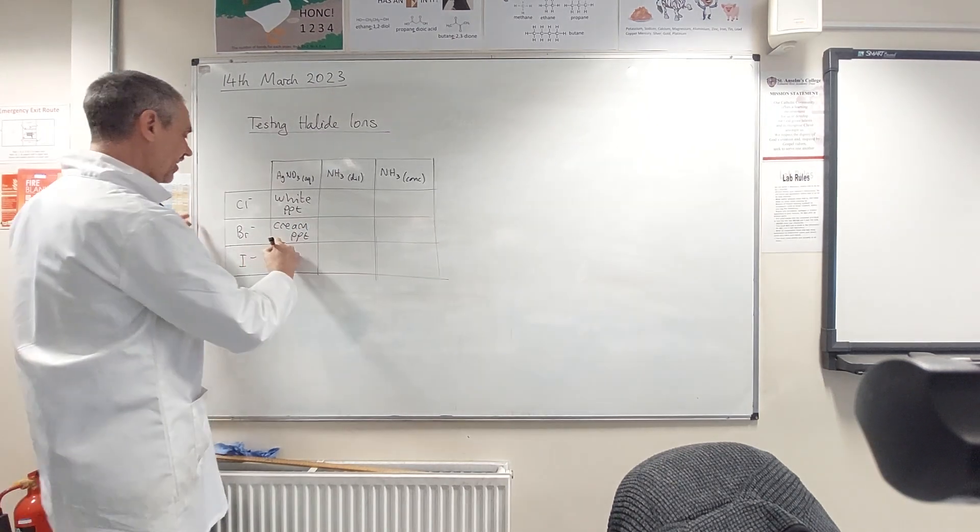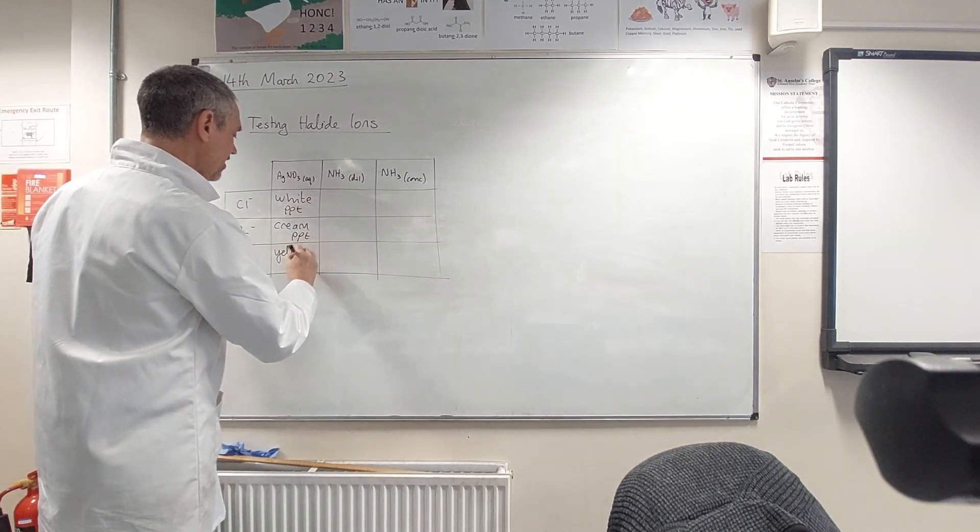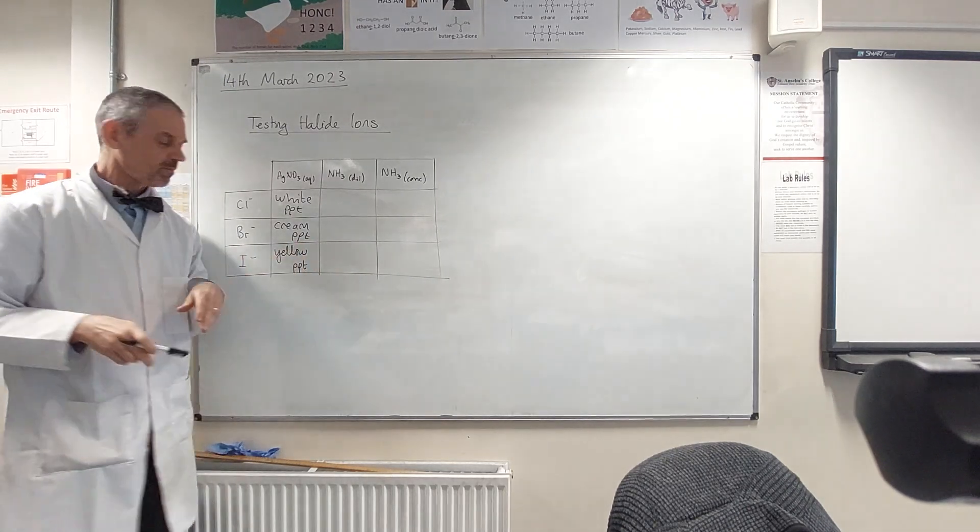Yellow. Yeah, yellow which is usually... If you say a light yellow or whitish yellow, it's a bromide.